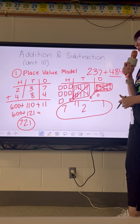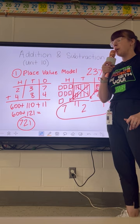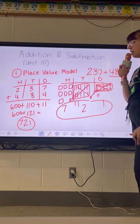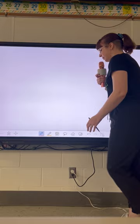In the iReady textbook, they will often call this drawing a 'quick picture.' They don't always use the hundreds, tens, and ones chart, but I encourage students to use it because it keeps their work neat and organized — which is the key to success when we're drawing all these individual pieces. So that's the place value model.